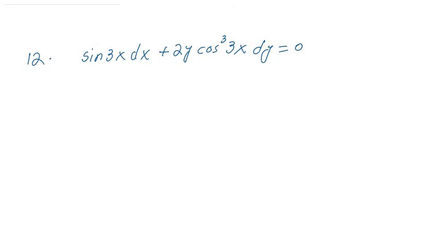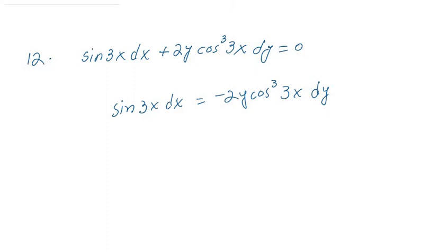Here we have question 12. Within this question you can write 3 sin(3x) dx, and you can move the minus 2y cos³(3x) dy term to this side. I want the terms of X on the left side, so using cross multiplication I have to multiply this term with the denominator of the other term. So: sin(3x) divided by cos³(3x) dx equals minus 2y dy.